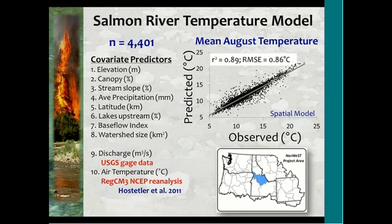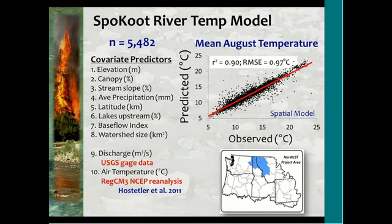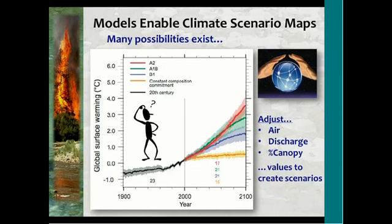The same set of covariate predictors applied to the Salmon River Basin explains about 90 percent of variation — not quite as good as Clearwater, but still very good. The third production unit completed is the SPACUT unit — the Idaho Panhandle and Northwest Montana — with more than 5,000 summers of monitoring effort, a couple thousand unique sites across a much larger geographic area.